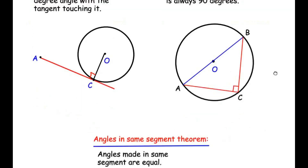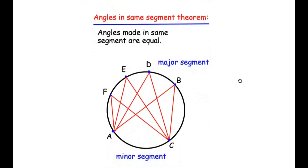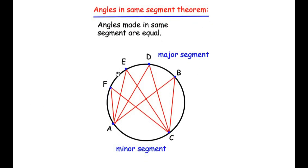The last theorem we are going to use is the angles in the same segment theorem. Here the entire circle is divided into two segments by points A and C — one is the minor segment and one is the major segment. We have made many angles in the major segment at points B, D, E, and F. For example, if angle B is 50 degrees, then angles D, E, and F are also going to be 50 degrees, because all these angles are made in the same segment, which is the major segment.